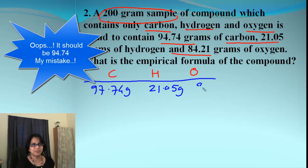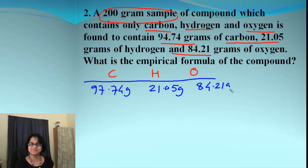Alright. 94.74 grams, 21.05 grams, 84.21 grams. Next step is mass to the moles and when you do mass to the moles we divide by the molar mass for each of the elements. So there we go.